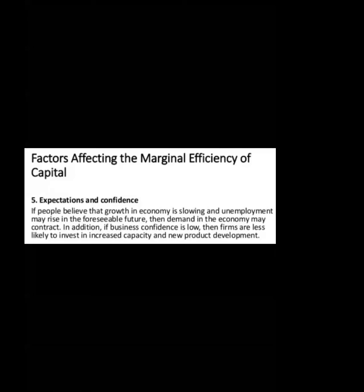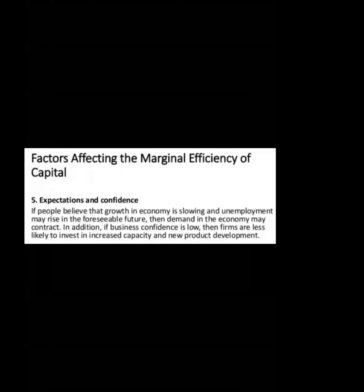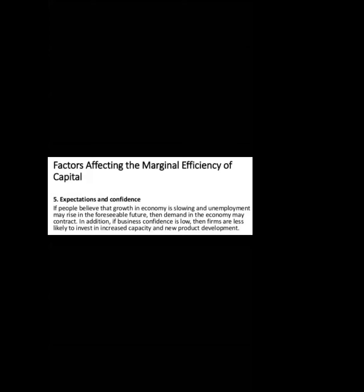Now, expectations and confidence. If people start believing that growth in the economy is slowing and unemployment may rise in the near future, then demand in the economy may contract. If business confidence is low, then firms are less likely to invest in increased capacity and new product development. When people expect that business revenue will decrease, they reduce their investment. These are five to six factors that affect the marginal efficiency of capital.